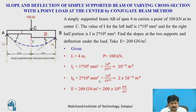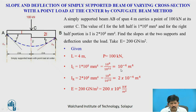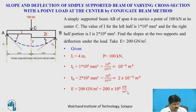First, we convert units to kilonewtons and meters. I for the left portion is 1×10⁸ mm⁴ equals 10⁻⁴ m⁴. I for the right section is 2×10⁻⁴ m⁴. E is 200×10⁶ kN/m².